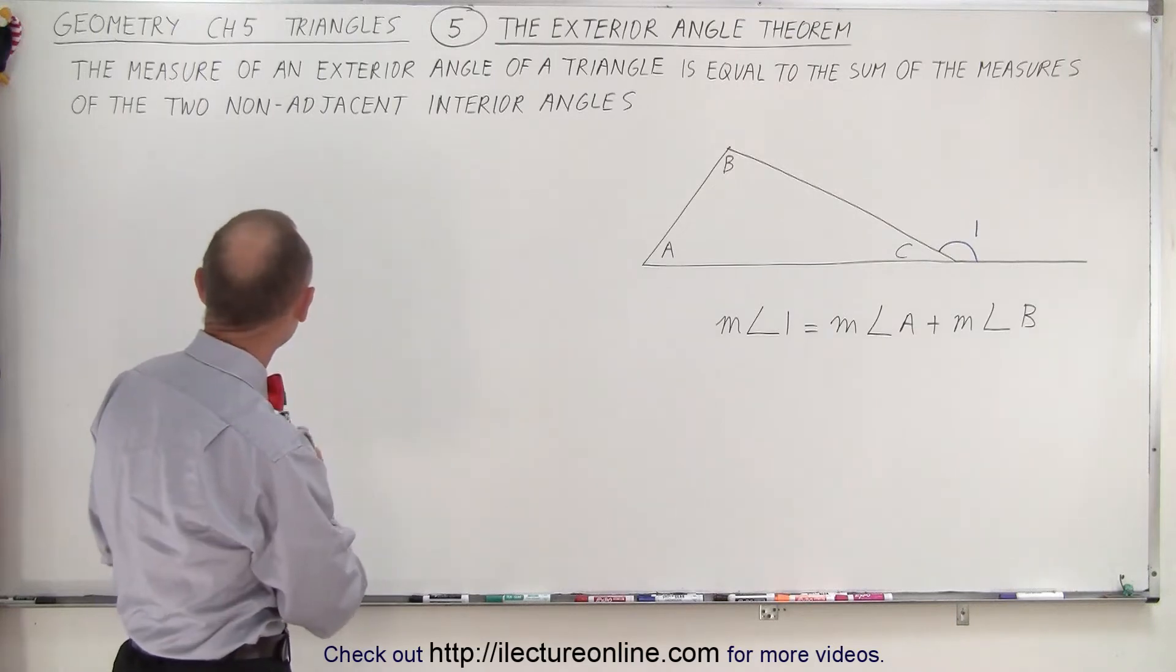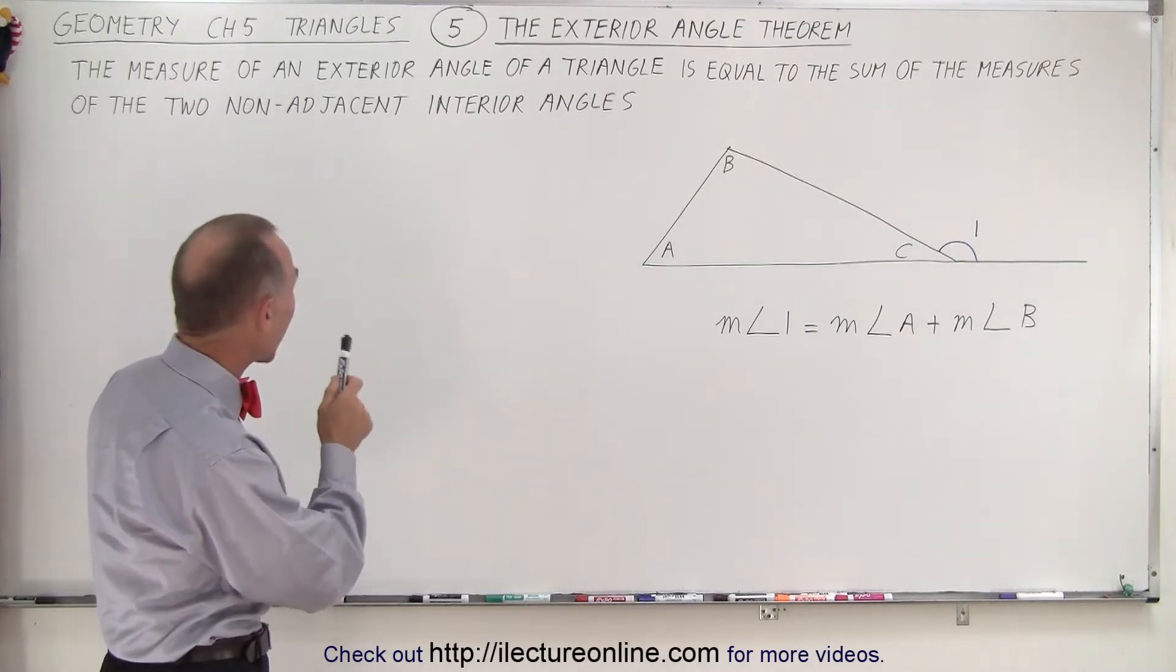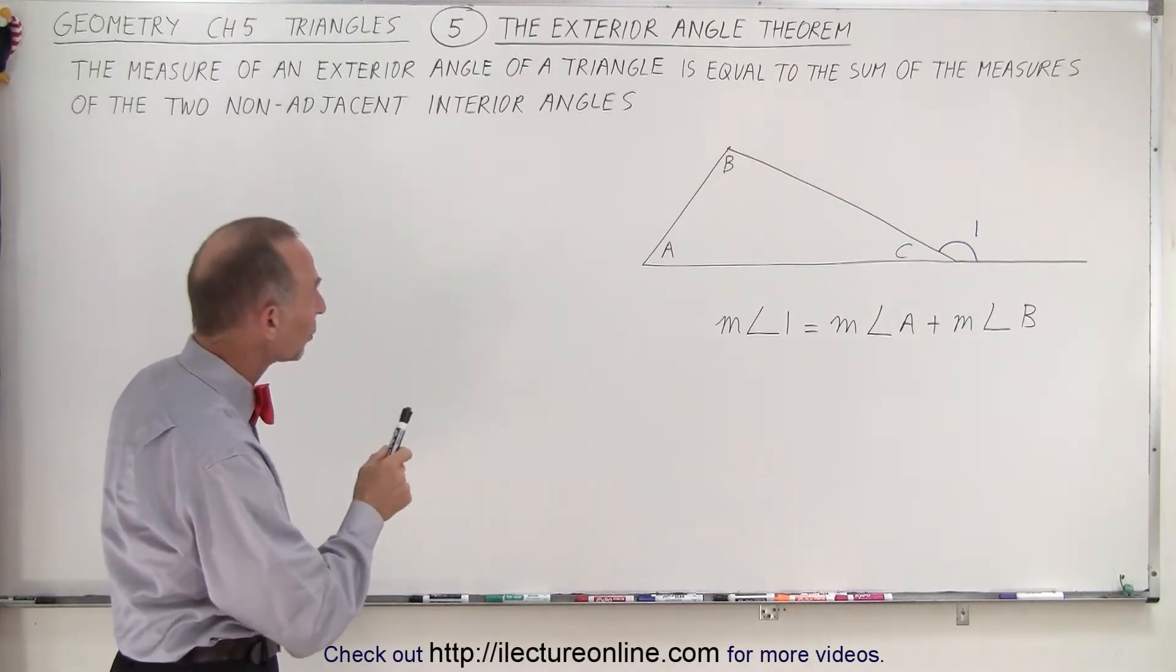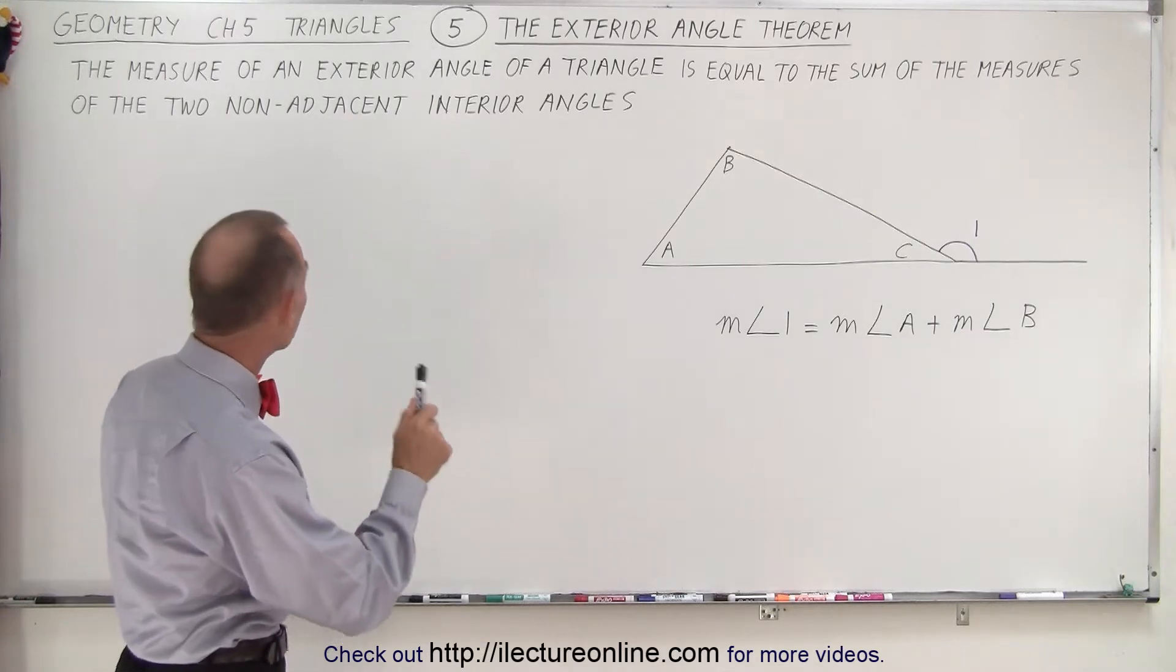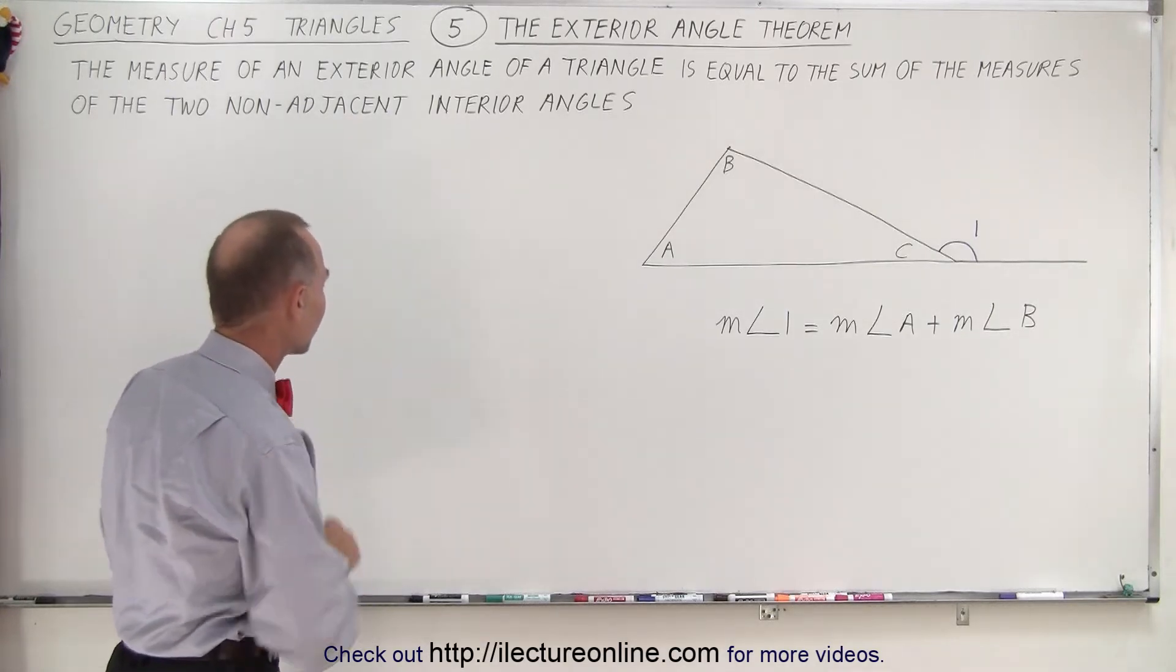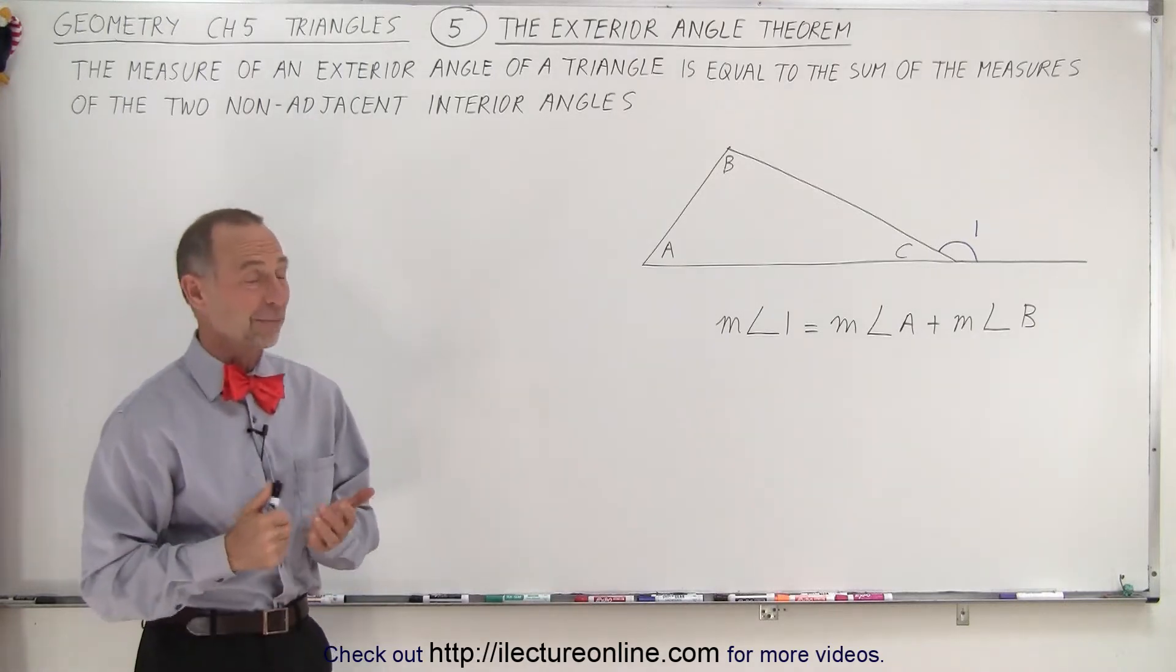Let's read it together. It says the measure of an exterior angle of a triangle is equal to the sum of the measures of the two non-adjacent interior angles. What does that mean?